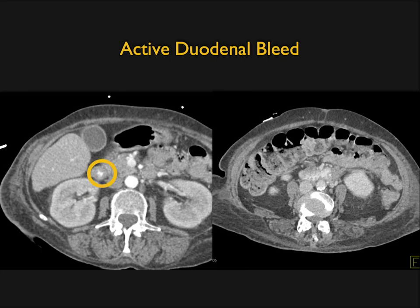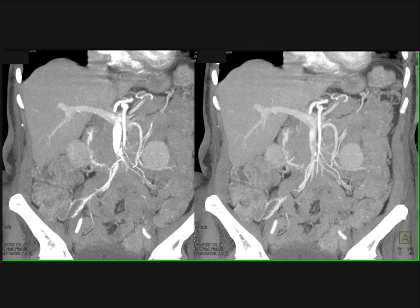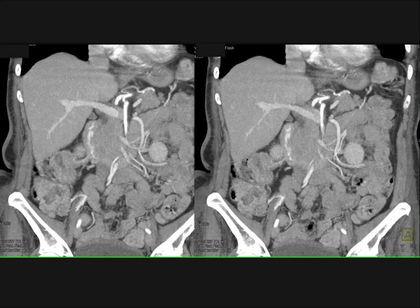When doing CT, you never want to use positive oral contrast — always use water. Here's a nice example: there's high density in the duodenum, which with positive contrast you might dismiss. But on the 3D MIP imaging you can see the SMA, celiac, portal vein, and SMV — and the entire duodenum has high-density material within it. That's active bleeding in the duodenum, very nicely demonstrated.